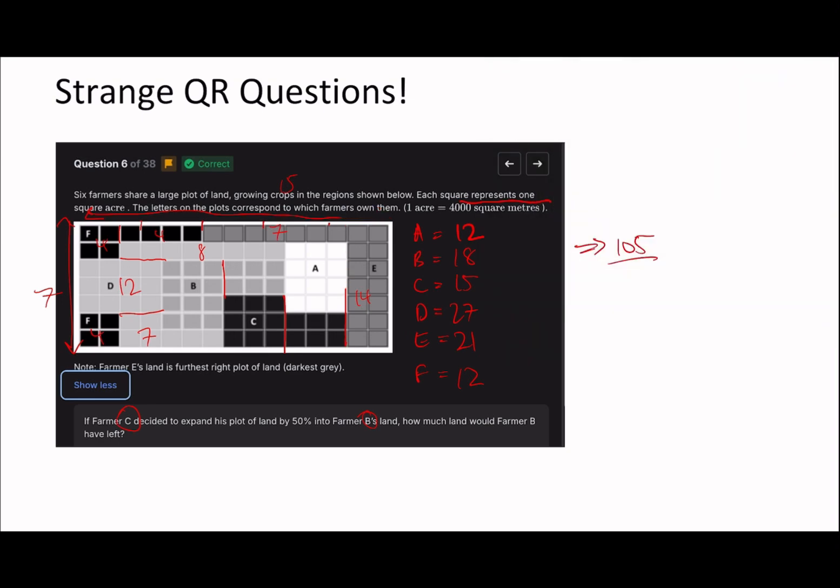Okay cool, so those numbers are all right. Yes, I've taken this additional time, perhaps I shouldn't have, but this is definitely one of the ones I would come back to. Like I said, I think it would make the later questions a little bit easier. So when it says if Farmer C decided to expand the plot of land by 50%, that means he takes another 7.5 into Farmer B's land, so Farmer B will lose 7.5 and ends up with 10.5 acres. So that's what the answer is going to be in this instance.